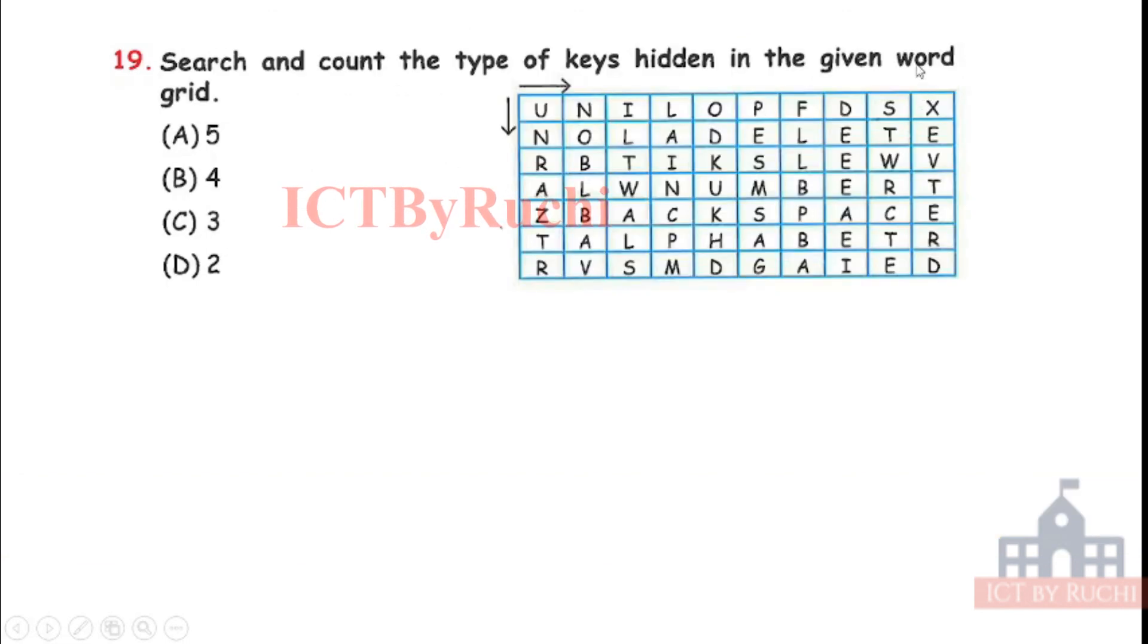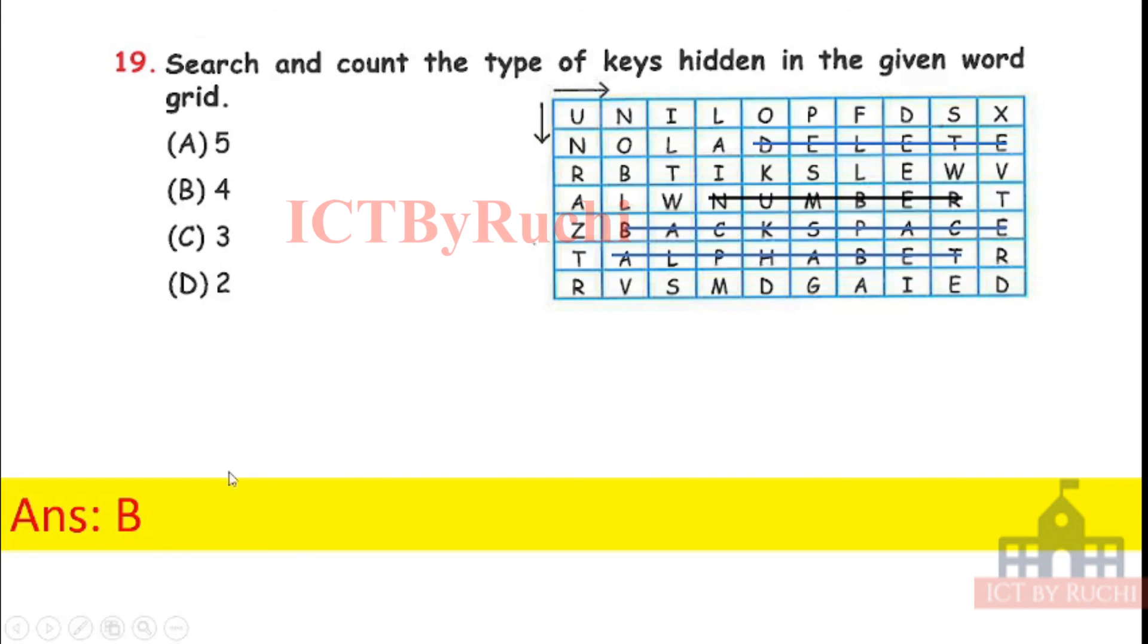Next question. Search and count the type of keys hidden in the given word grid. It is basically achievement section. Little time consuming but very easy if you know about the type of keys which is in a computer. First, you know what type of keys. And then you have to find out if that is available in this grid. If they had present, you have to mark it and then count it. Take your time and tell me the answer. Answer is B, 4. You can see we have delete, number, backspace and alphabet keys.